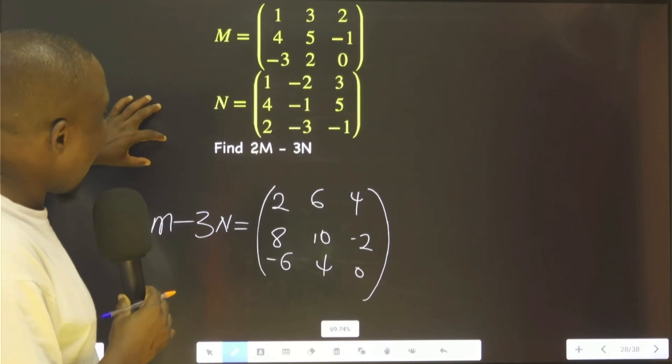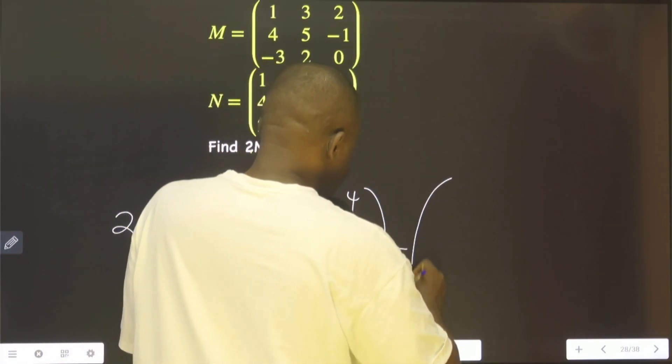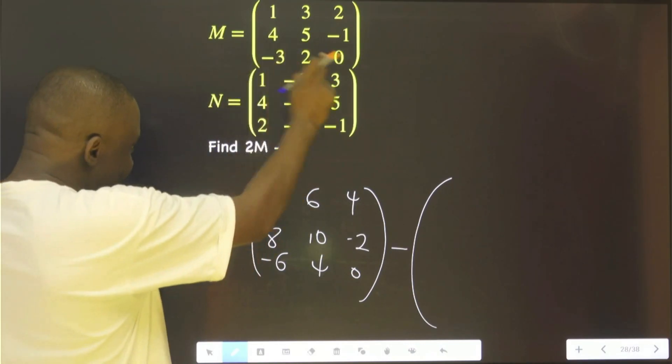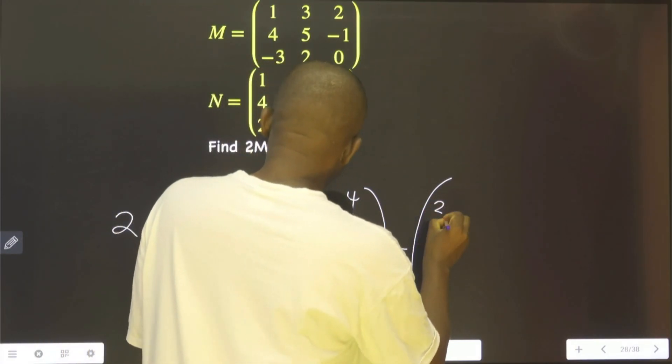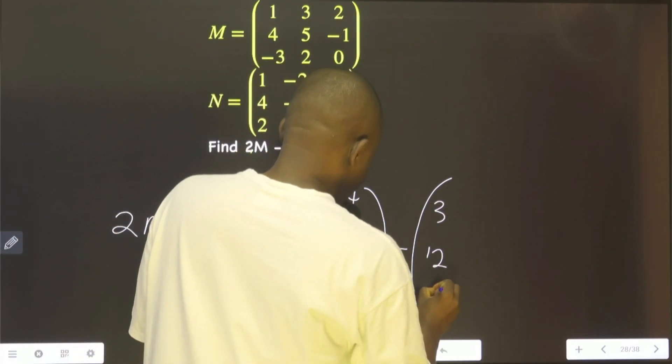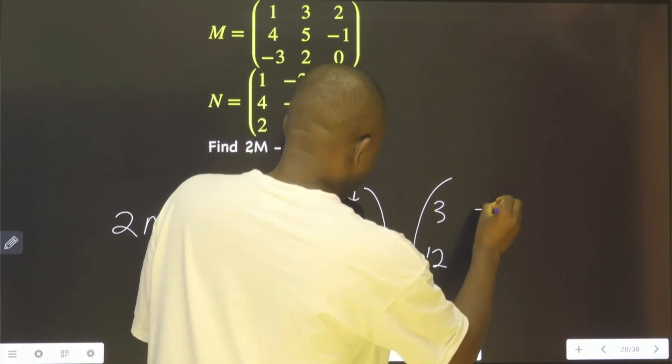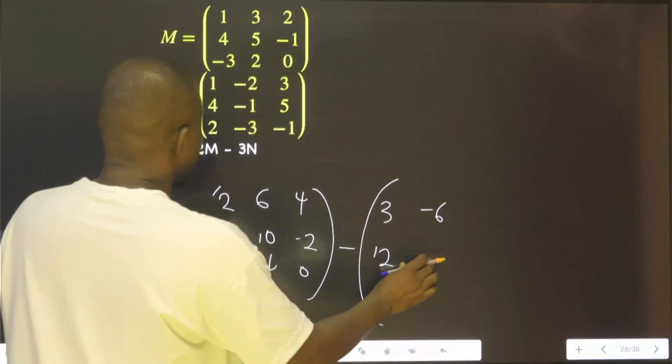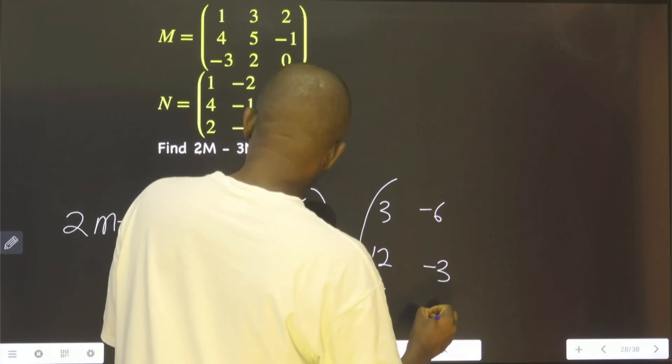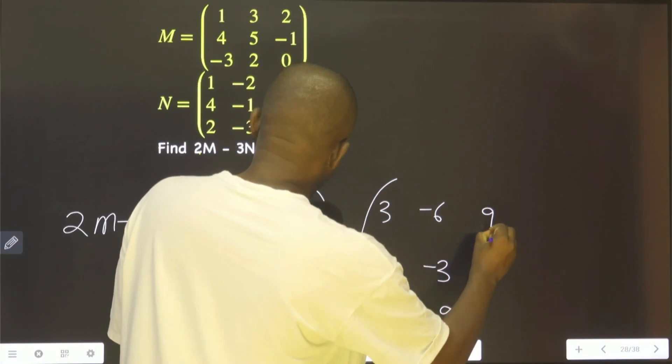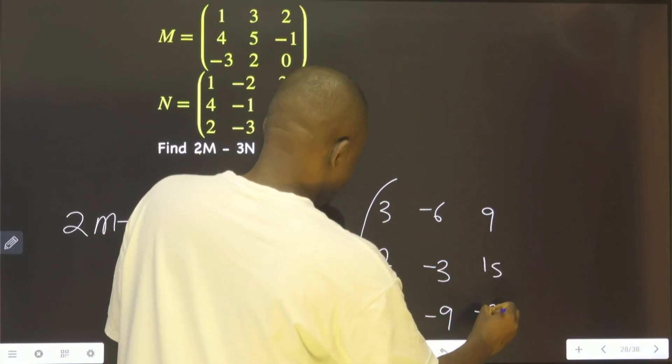Minus 3N. Minus 3N. Multiply each of these by 3. That is 3, 12, 6, minus 6, minus 3, minus 9, 9, 15, minus 3. Okay?